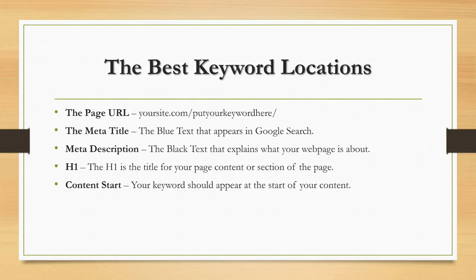After the meta title you have the meta description — that's the black text that appears in the Google search results that explains, with more words, what your web page is about. If you think about them together, the meta title could be considered the headline for your article, and the meta description is like the first paragraph — the first few lines of text that gives people an idea of the content to come.